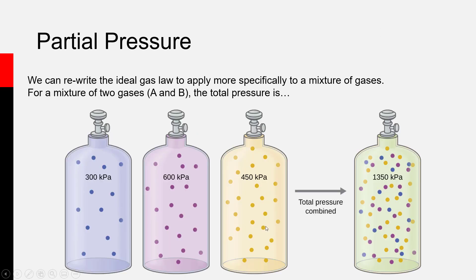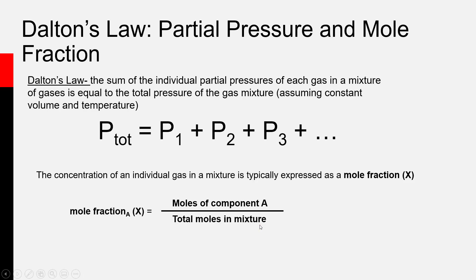Going back to our diagram with three gases — blue, purple, and yellow — we would use the mole fraction to talk about how much of the blue gas we have relative to all the gases put together. The mole fraction of the blue gas equals the moles of blue divided by the moles of blue plus the moles of purple plus the moles of yellow. You can talk about the mole fraction of any gas in a mixture simply by comparing how many moles of that chemical there are relative to the total moles in that mixture.